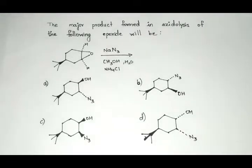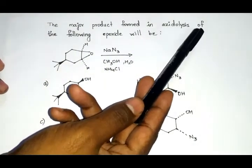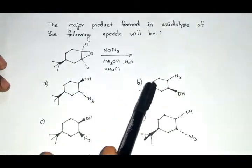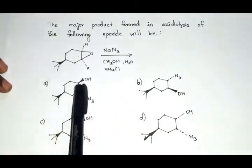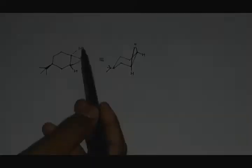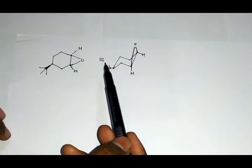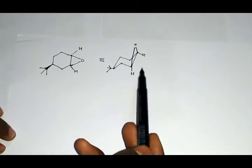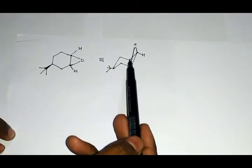Hello friends, in this video we will solve a problem: the major product formed in the azidolysis of the following epoxide will be... This is our reactant. We need to draw an equivalent structure, that is, the chair form of this particular reactant.